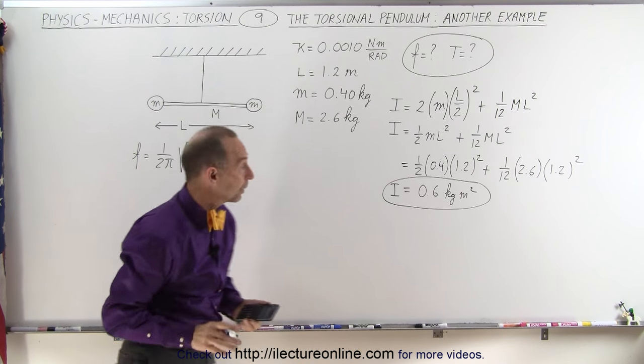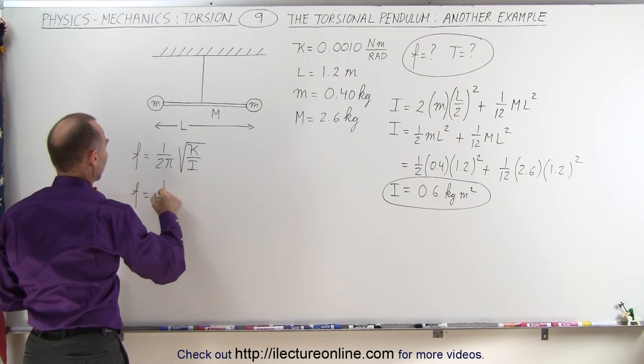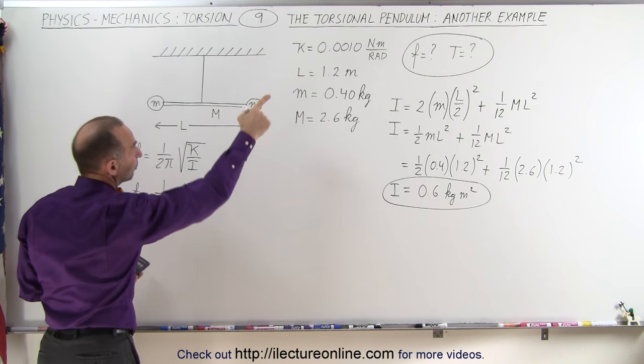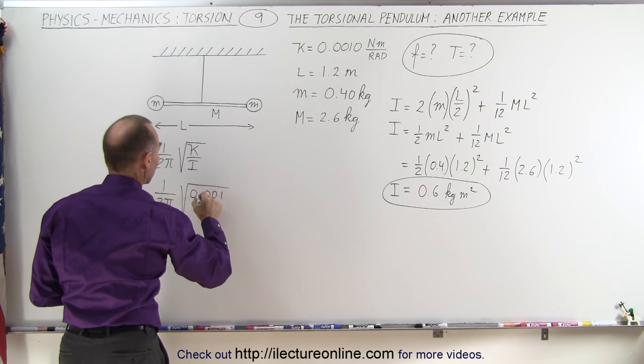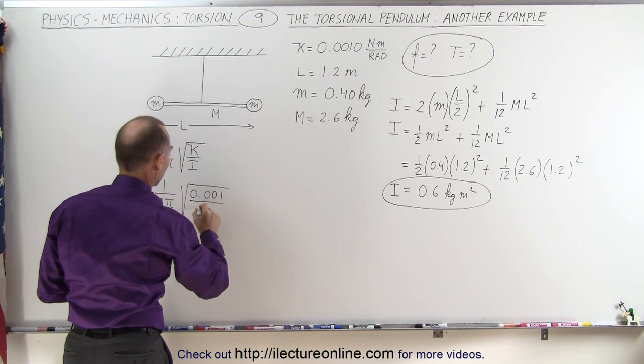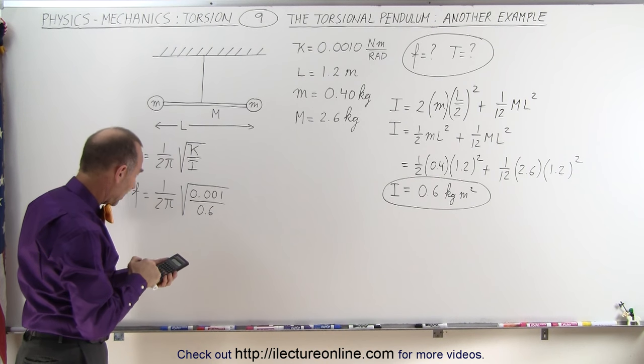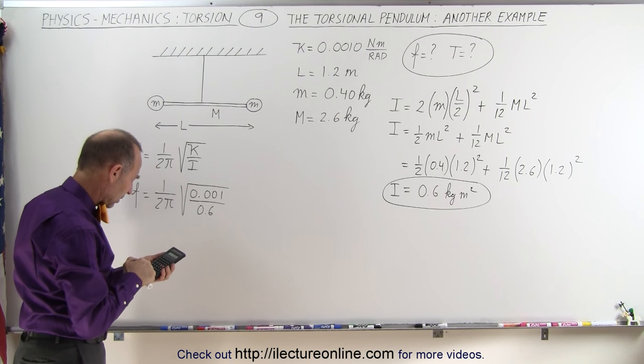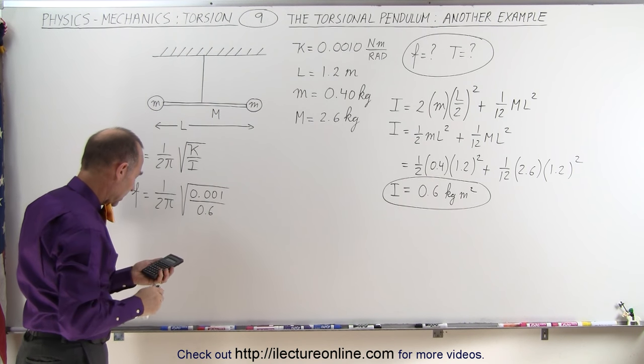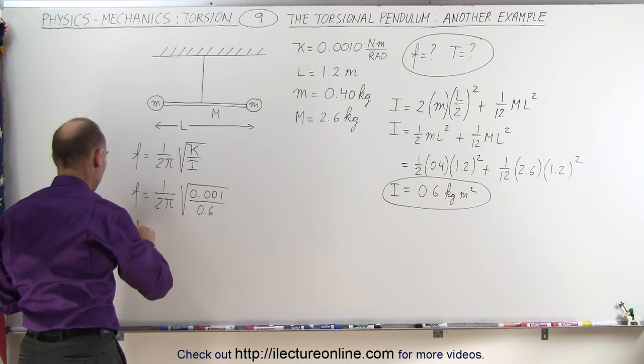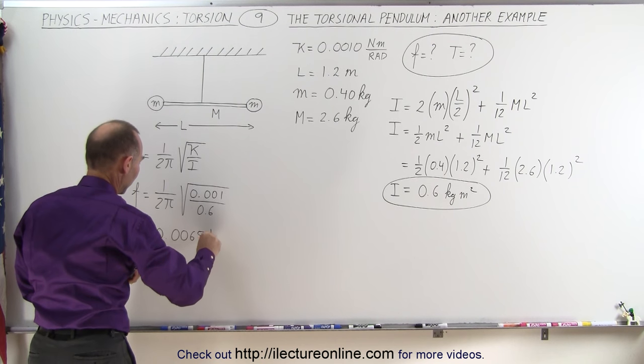Alright, now we can go ahead and find the frequency. The frequency is equal to 1 divided by 2π times the square root of the torsional constant 0.001 divided by the moment of inertia of 0.6, which gives us a frequency equal to 0.0065 hertz.